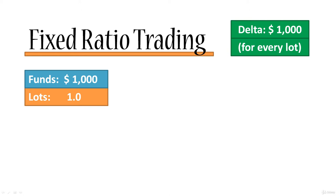Core concepts of the fixed ratio trading method. Let's remember one name of a variable that we will be using throughout. The name is delta, and you can see it here on the top right. We'll set delta initially at $1,000 for every lot. Right now that may make no sense whatsoever, but it will in just a couple of brief minutes. So let's just remember that delta is $1,000 per every lot.